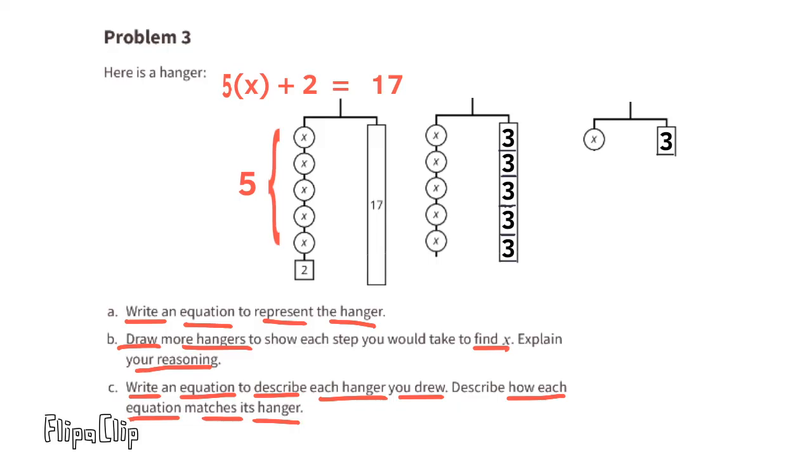Let's move to the second hanger in the middle. We have 5x's on the left and it's balanced with five boxes each with a value of 3 on the right. The equation would be 5x = 15 because 5 times 3 is 15. The hanger on the right is balanced with an x on the left side and a 3 on the right side. So the equation would read x = 3.